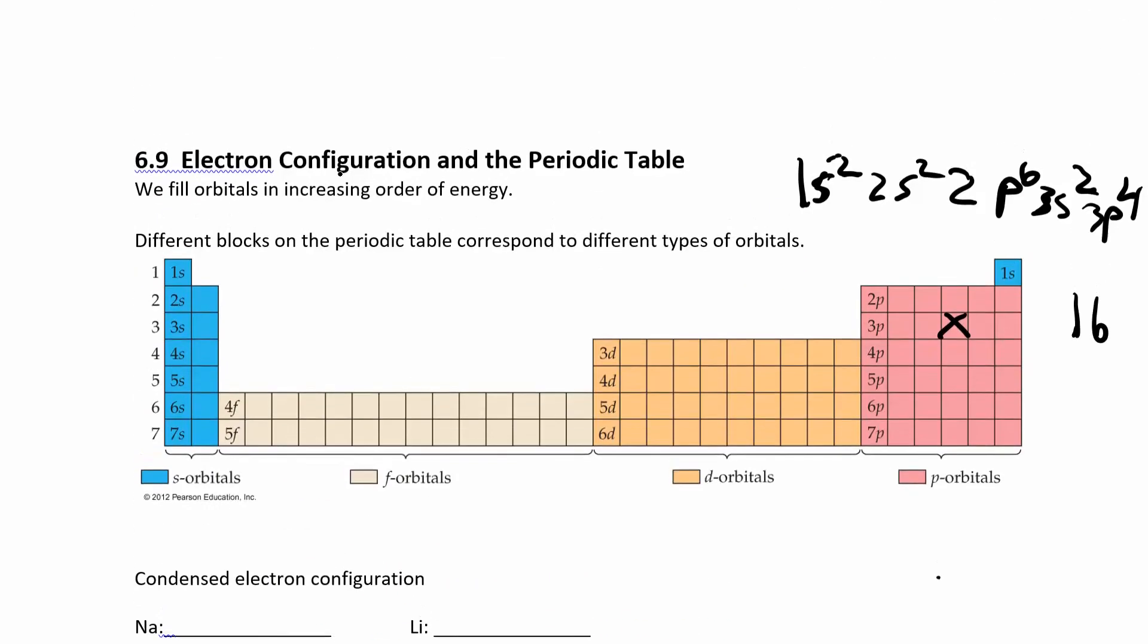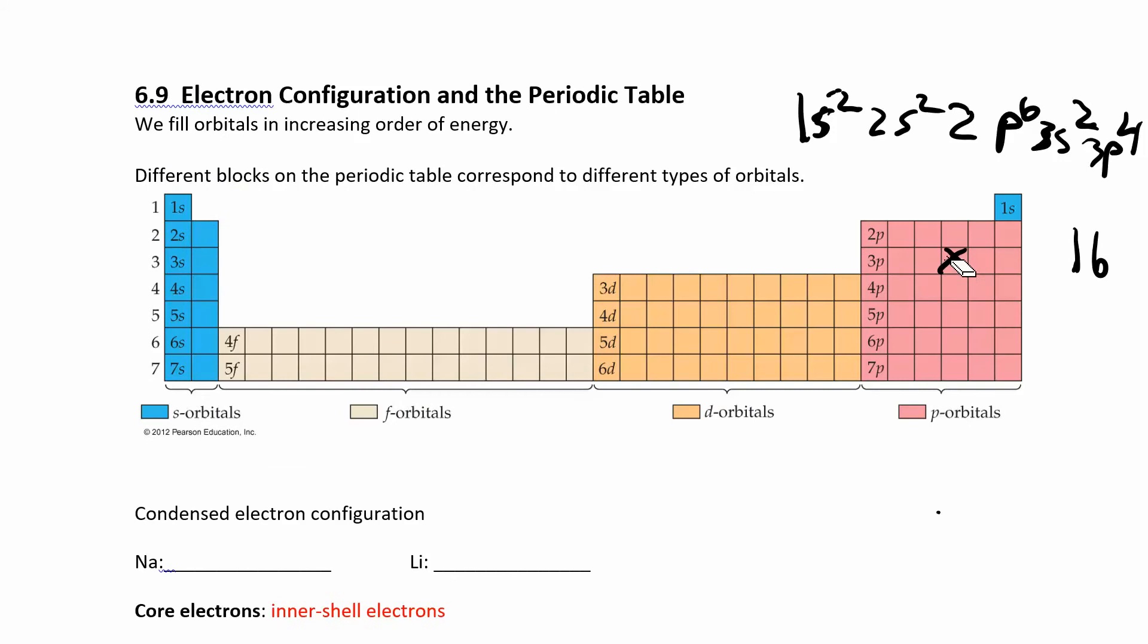If you use this block system, you should be able to figure out what the electron configuration is, just based on where it's located in the periodic table. And then remember that you fill up 4s before 3d. There's another, there's the diagonal method you can also use.